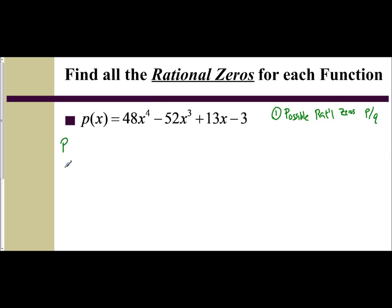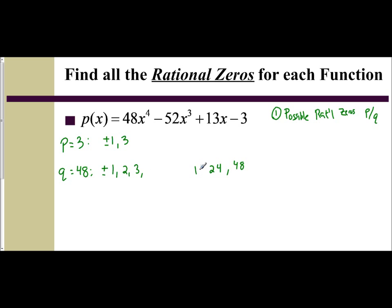So we're going to have to find our p and our q values. Remember, p here, we have our constant of 3. Q, we have our leading coefficient, which is 48. So our p values are all the factors of p: plus or minus 1 and 3. The q values are the factors of 48: plus or minus 1 and 48. 2 and 24 give you 48. 3 and 16 give you 48. 4 and 12 give you 48. And 6 and 8 give you 48.